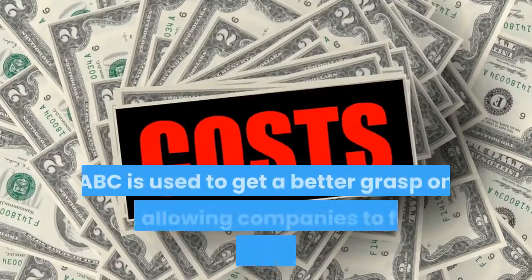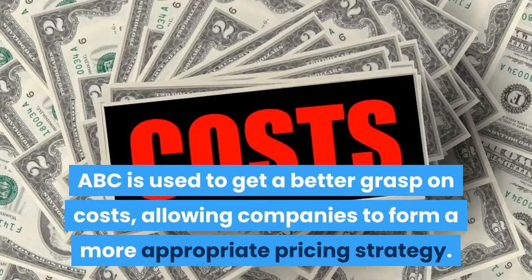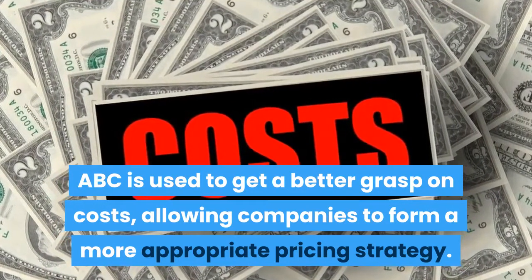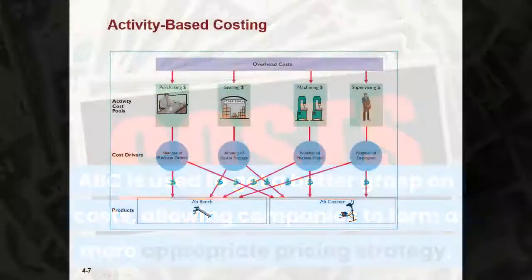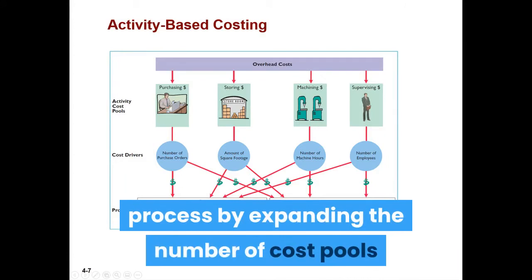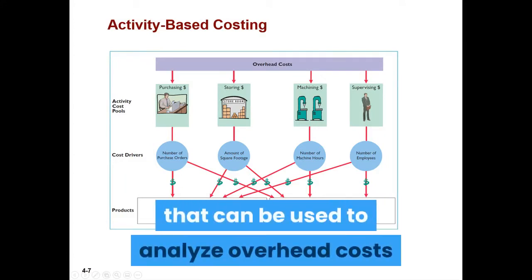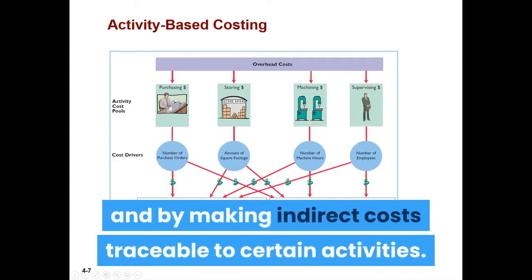ABC is used to get a better grasp on costs, allowing companies to form a more appropriate pricing strategy. Activity-Based Costing benefits the costing process by expanding the number of cost pools that can be used to analyze overhead costs and by making indirect costs traceable to certain activities.